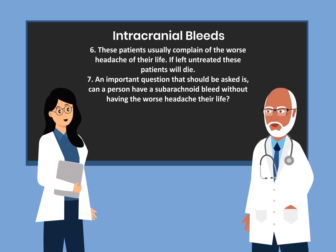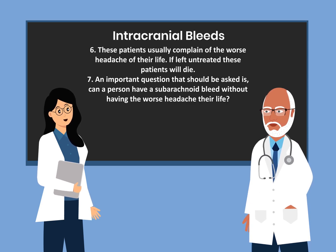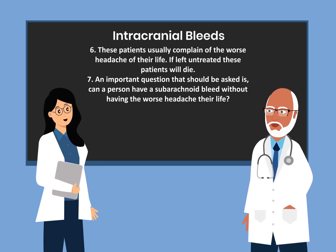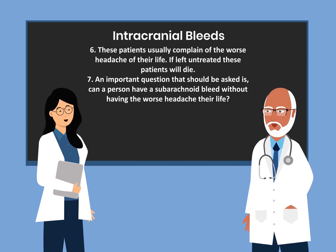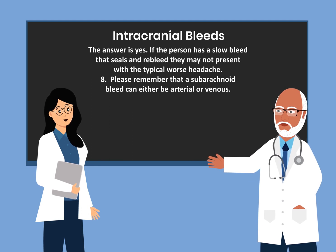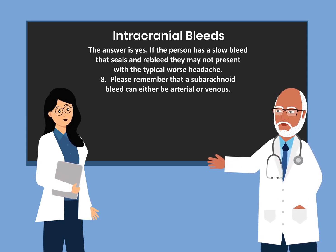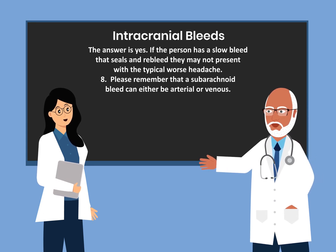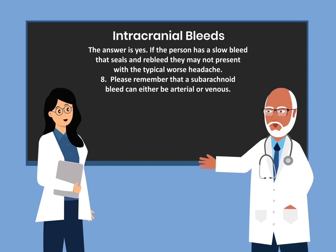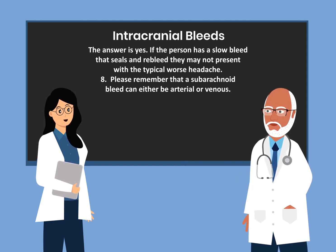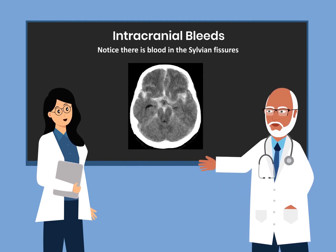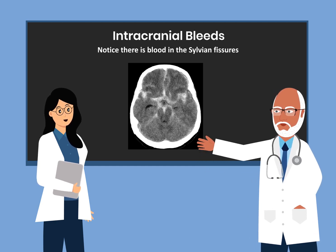An important question is: can a person have a subarachnoid bleed without having the worst headache of their life? The answer is yes. If a person has a slow bleed that seals and re-bleeds, they may not present with the typical worst headache. Please remember that a subarachnoid bleed can either be an arterial bleed or a venous bleed. Here is a classic subarachnoid bleed — note there is blood in the sylvian fissure.